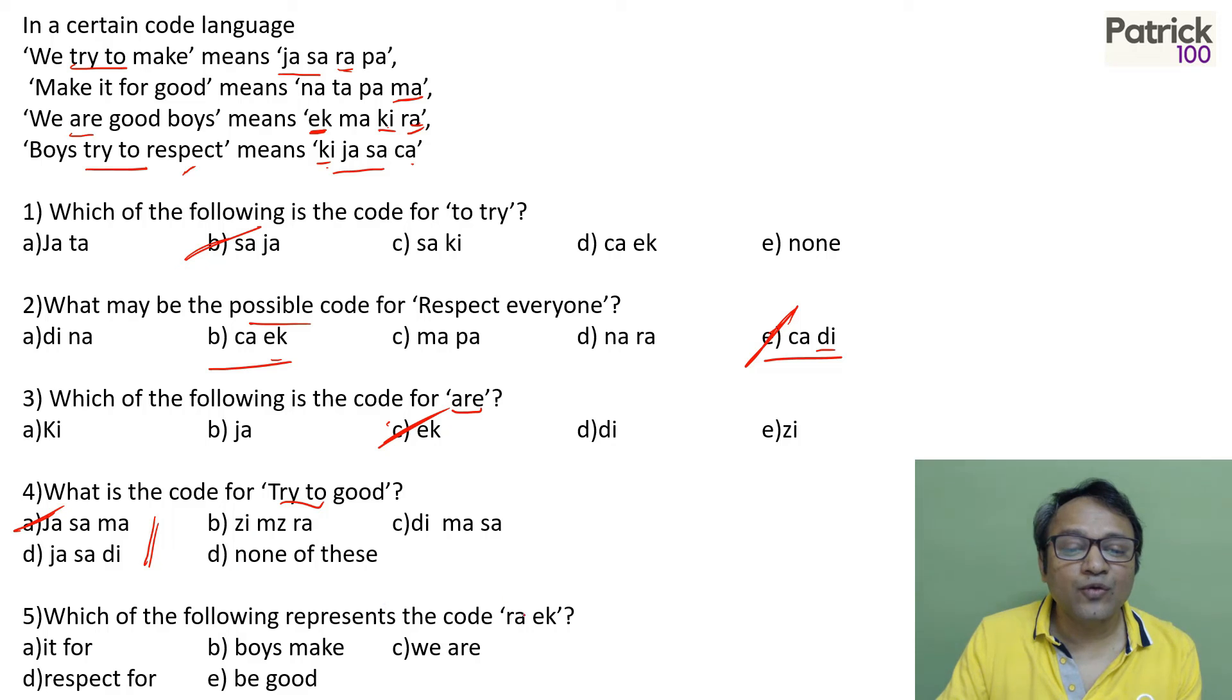Which of the following represents the code for RA EK? EK we already found out is R. So R is only one option. We are. Just to confirm whether RA is we. Okay. Where is RA?